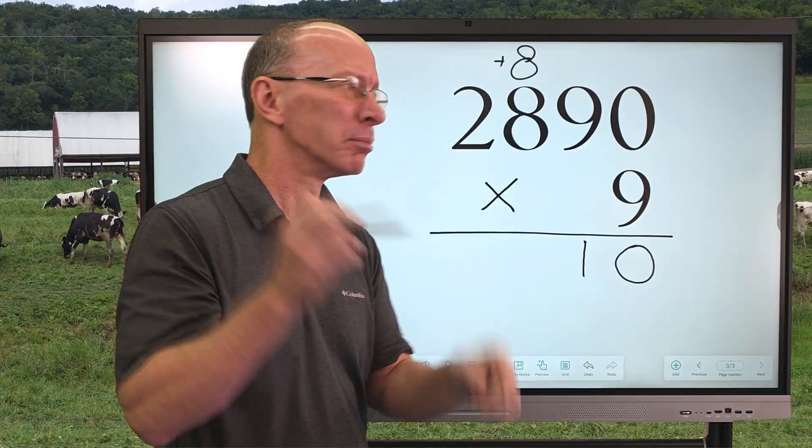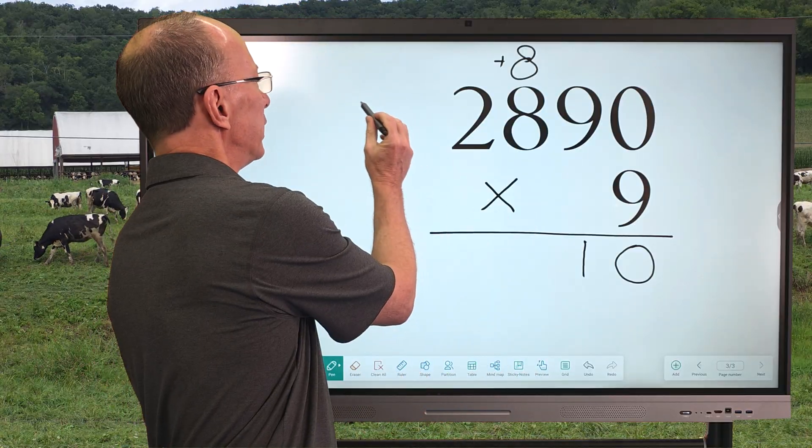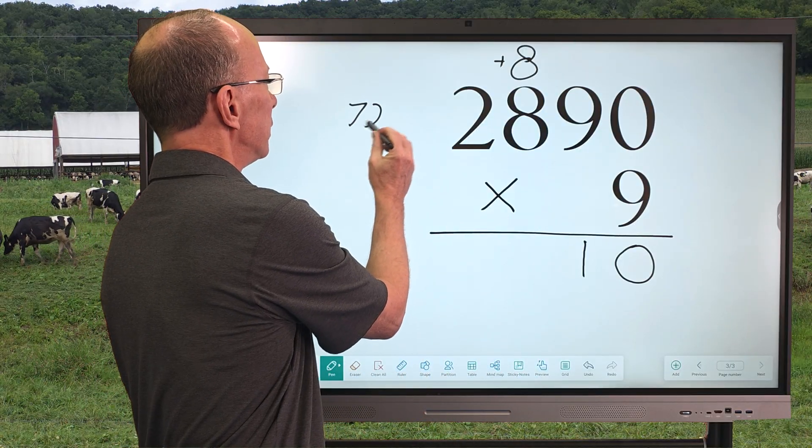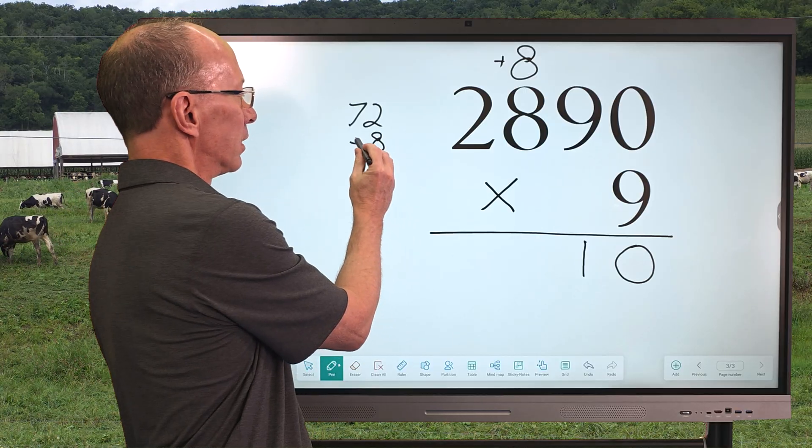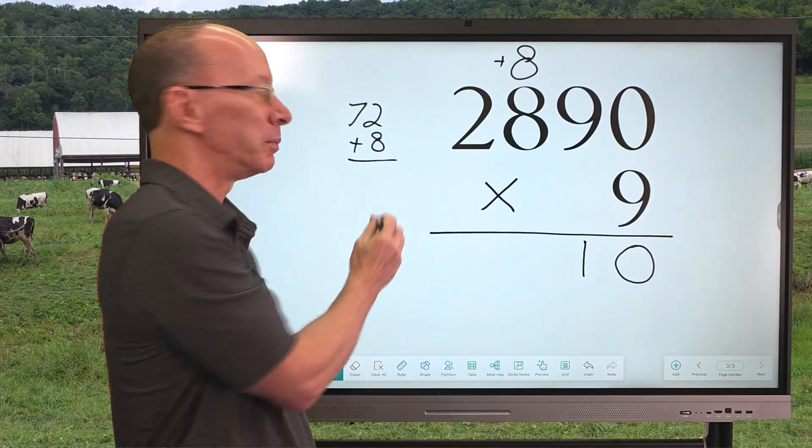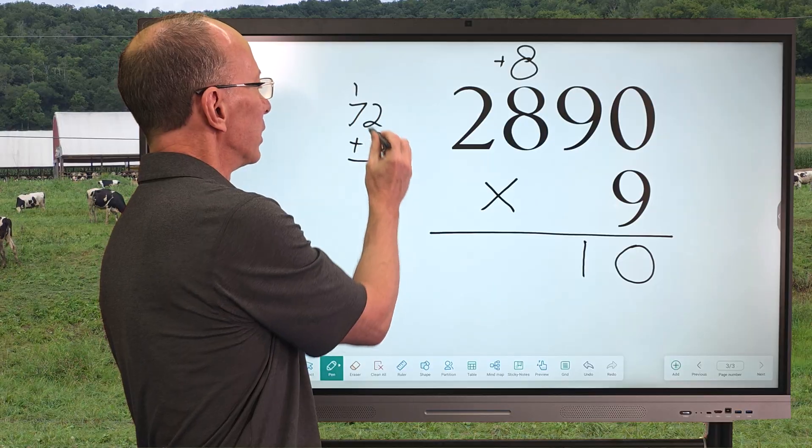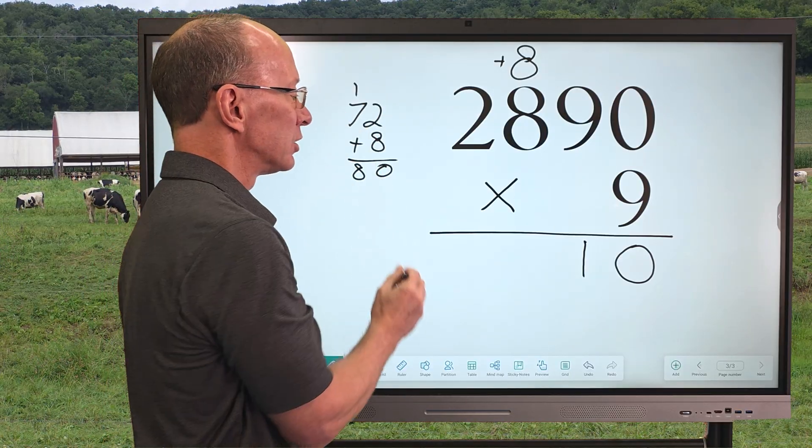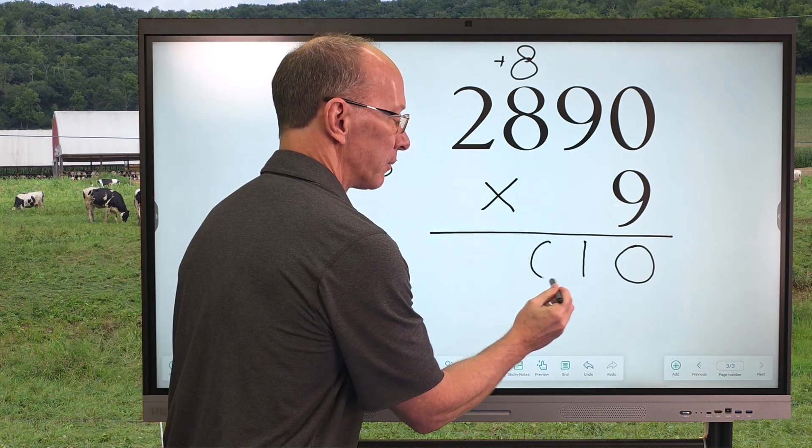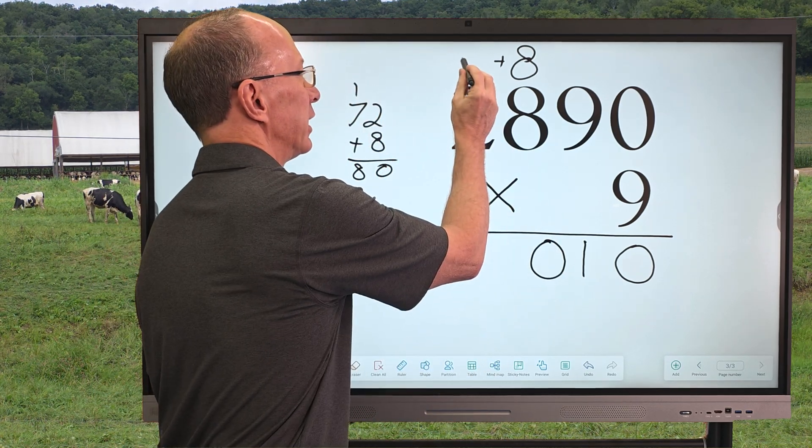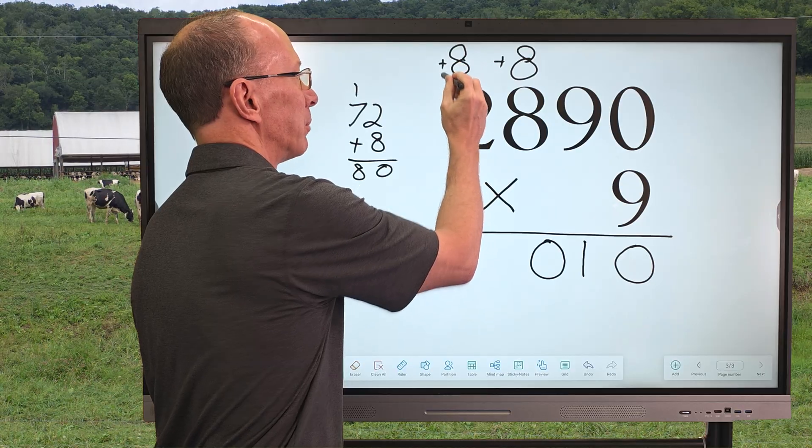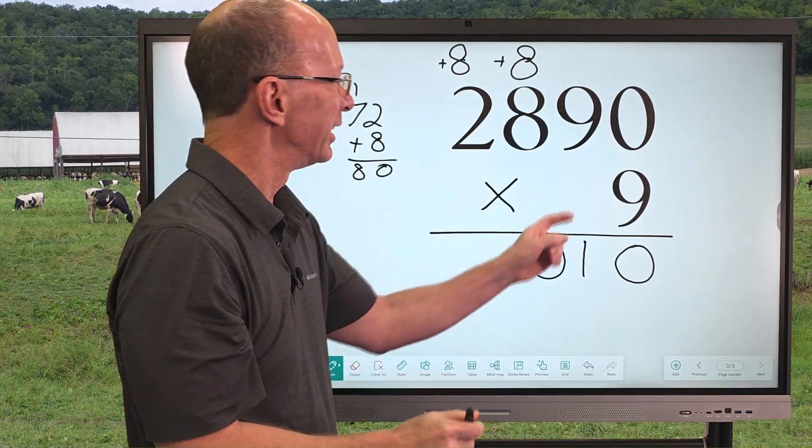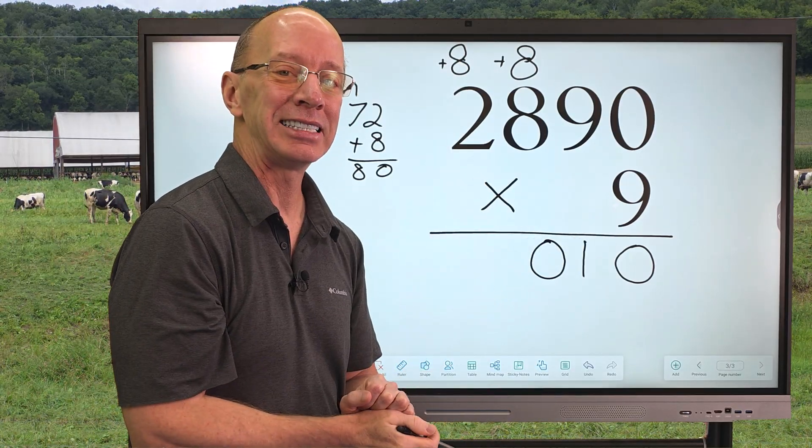Now, if you're not sure, if you can't do it in your mind, you can always go over here and take 72 plus 8. So then 8 plus 2 would be 10. Carry the 1 and then 7 plus 1 which would be 8. So, we have 80. So, I'm going to put the 0 right here and then I'm going to carry that 8 all the way to the top there and we're going to add that in a little bit.